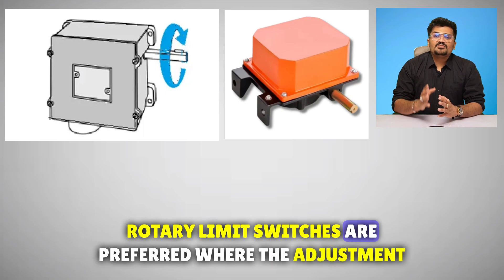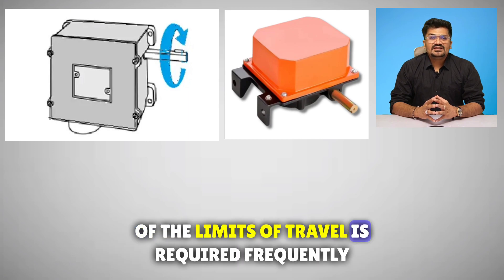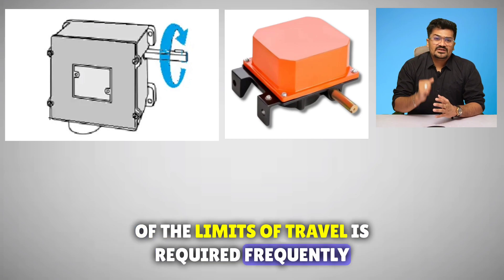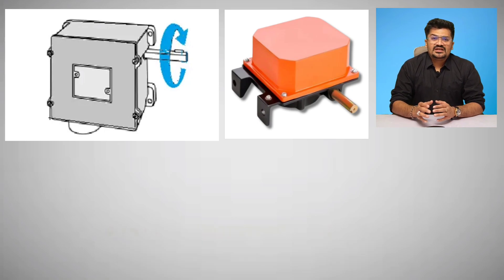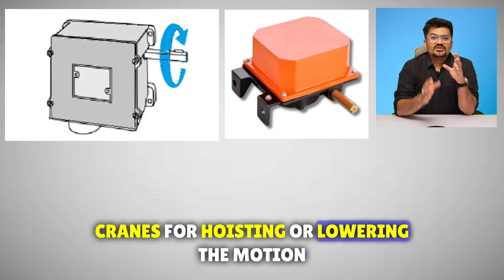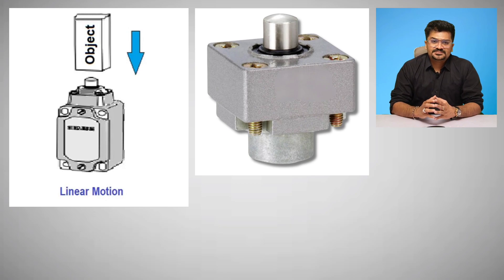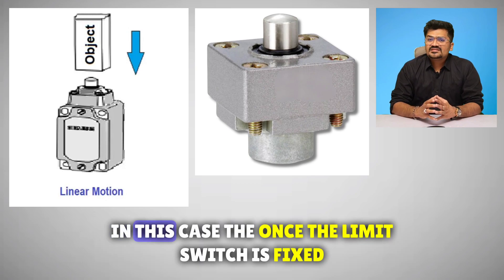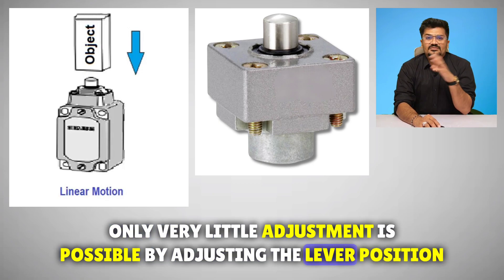Rotary limit switches are preferred where the adjustment of the limits of travel is required frequently. An important application is in overhead cranes for hoisting or lowering motion. The linear motion limit switch detects contact changes triggered by linear motion. In this case, once the limit switch is fixed, only very little adjustment is possible by adjusting the lever position.